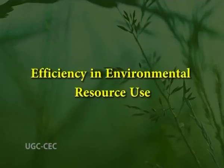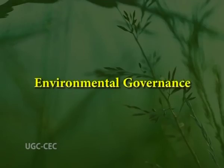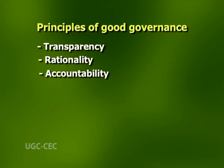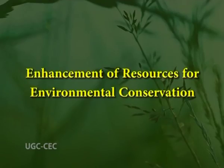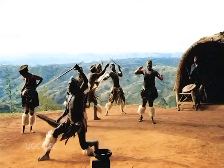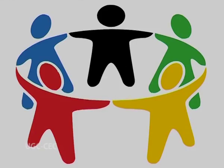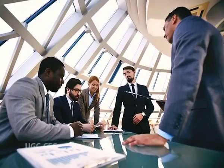Efficiency in environmental resource use: to ensure efficient use of environmental resources in the sense of reduction in their use per unit of economic output, and to minimize adverse environmental impacts. Environmental governance: to apply the principles of good governance — that is, transparency, rationality, accountability, reduction in time and costs, participation and regulatory independence — to the management and regulation of use of environmental resources. Enhancement of resources for environmental conservation: to ensure higher resource flows comprising finance, technology, management skills, traditional knowledge and social capital for environmental conservation through mutually beneficial multi-stakeholder partnerships between local communities, public agencies, the academic and research community, investors and multilateral and bilateral development partners.